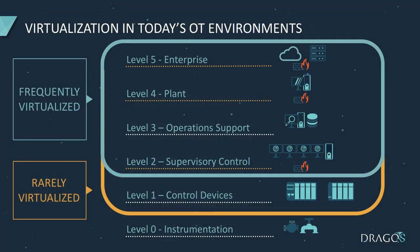Depending on whether you believe the Purdue model is dead or not, we're going to take a look at virtualization in today's OT environment at different levels. We frequently see virtualization, particularly on Windows and Linux assets, on level 5 right down to level 2 in the supervisory control.